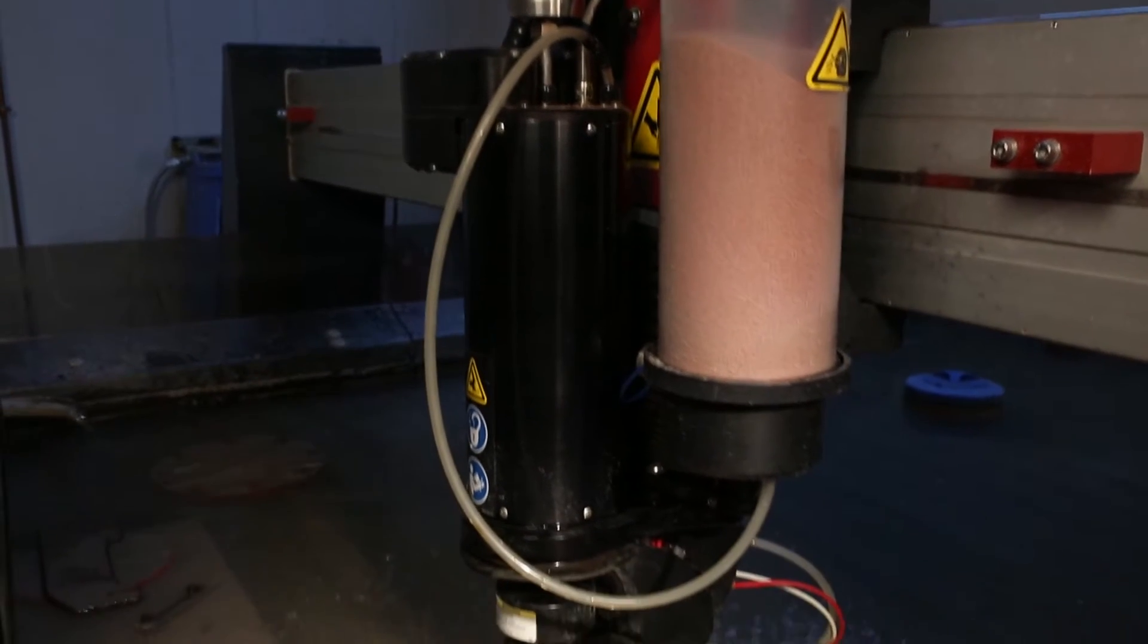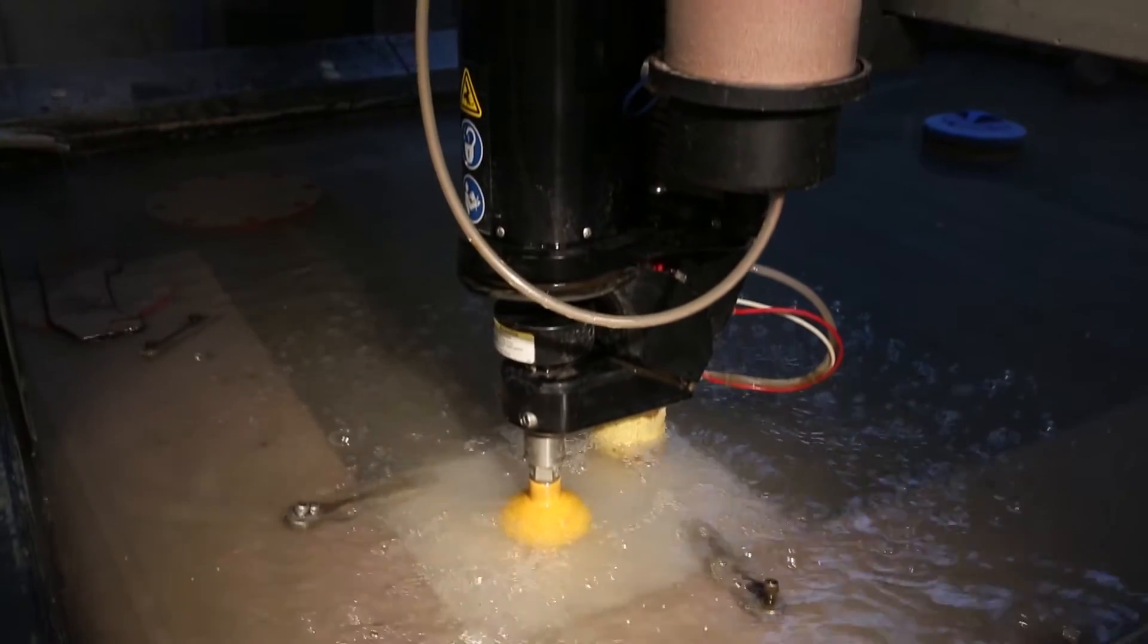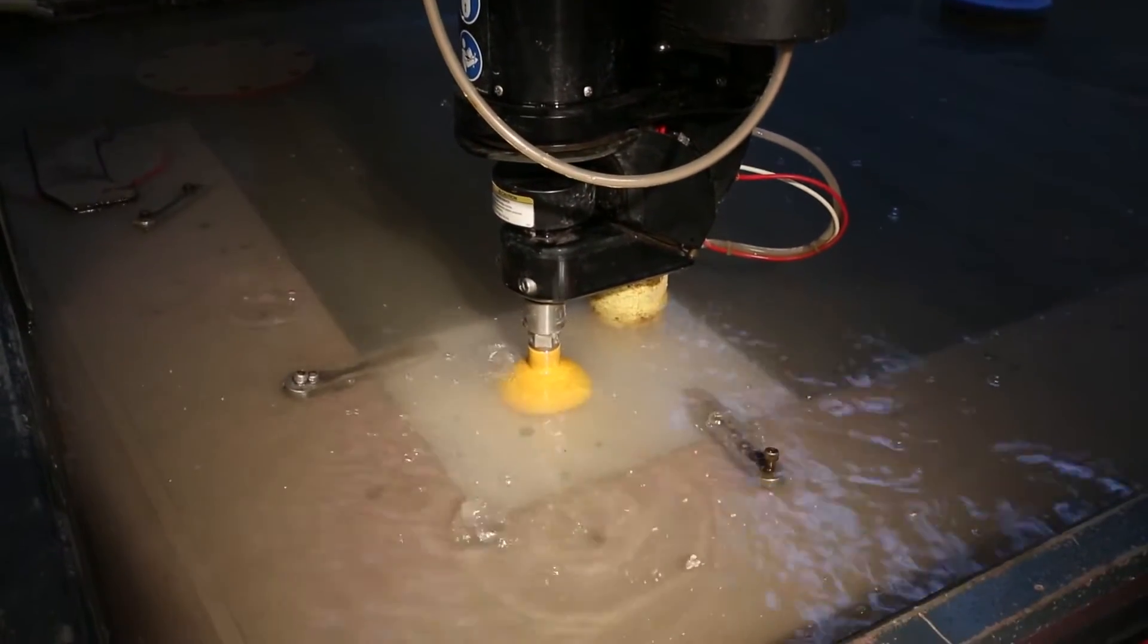When we have something that we can't cut with our laser cutters, we use our Omax WaterJet. It shoots 40,000 psi of water at a part. It can cut almost anything ranging from polycarbonate to metal. In addition to the high-pressure water stream, it mixes in an abrasive sand called garnet to help get a smoother finish around the edges.